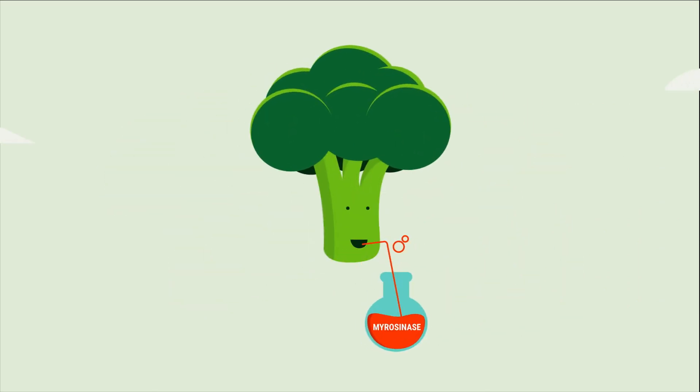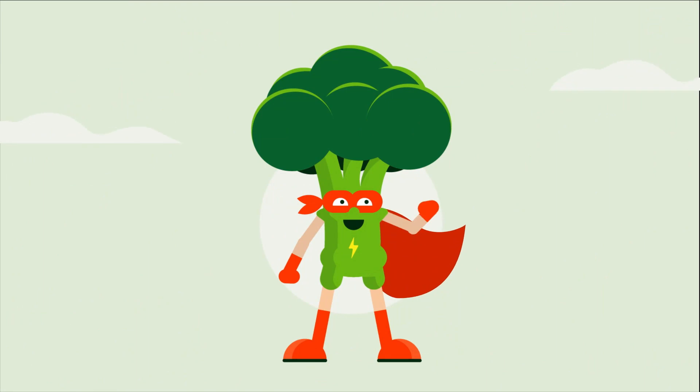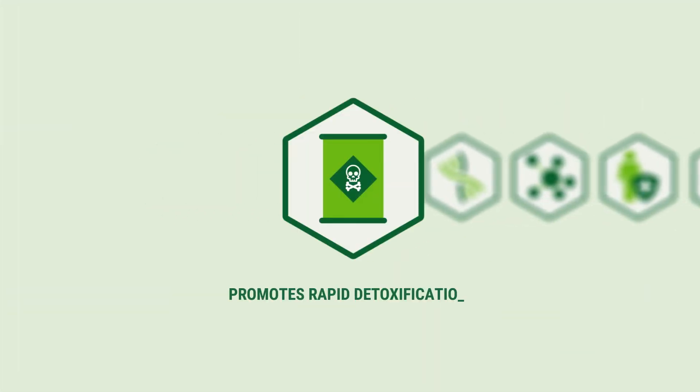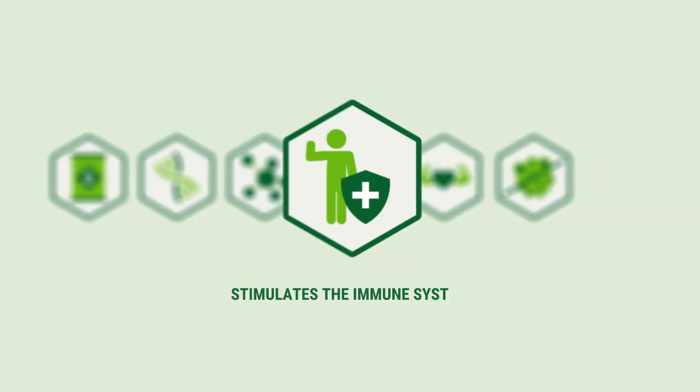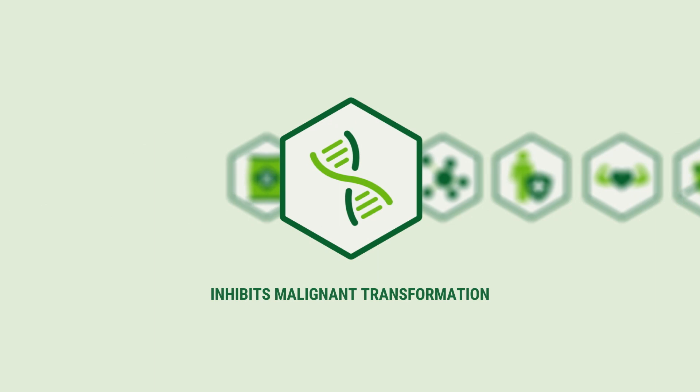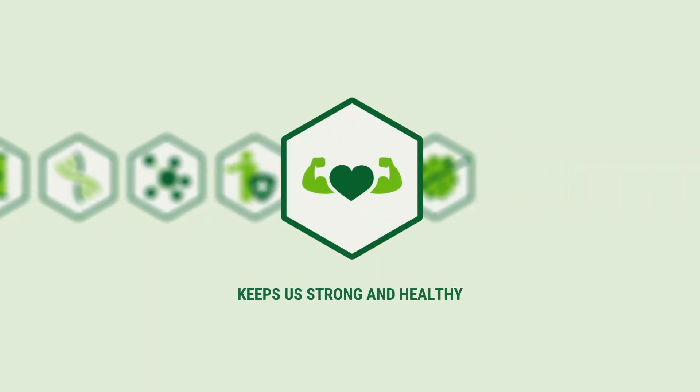Glucoraphanin requires the plant enzyme myrosinase for converting it into sulforaphane. Sulforaphane prevents oxidative stress, promotes rapid detoxification, stimulates the immune system, decreases the risk of developing cancers, inhibits malignant transformation, and keeps us strong and healthy.